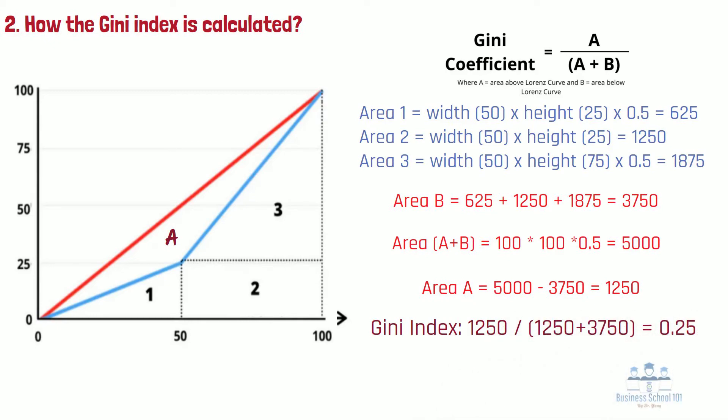From the formula, we can tell that the larger the area A, the higher the Gini index, which refers to a country that has a higher level of income or wealth inequality.